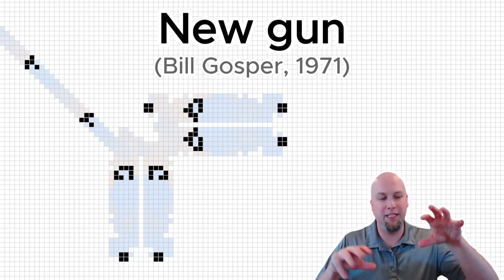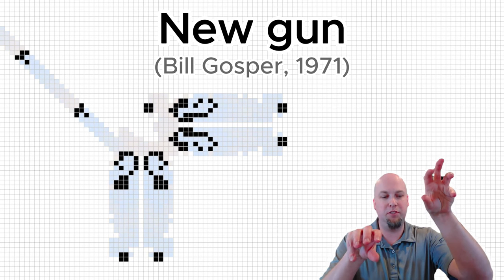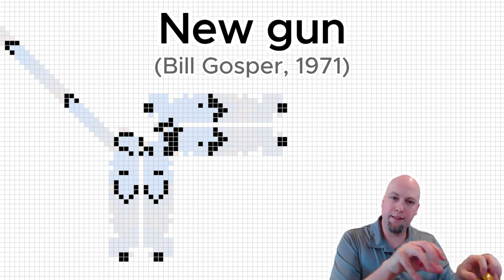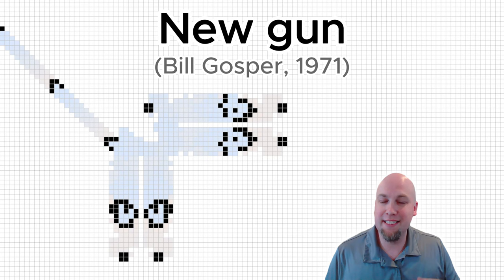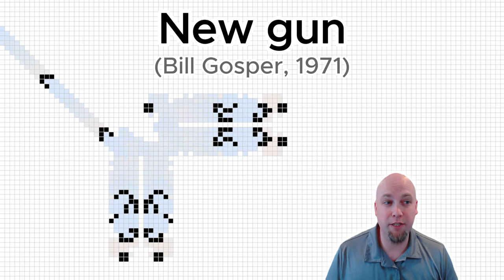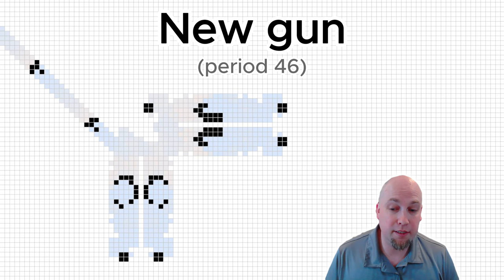And this one, similarly, it uses two configurations of objects to bounce into each other and create a glider when they collide that escapes from those two objects. And it does this every 46 generations, so this is called a period 46 glider gun.